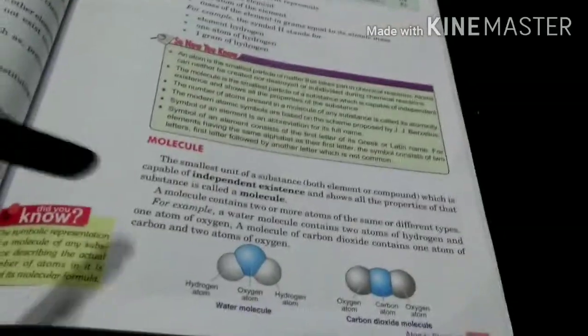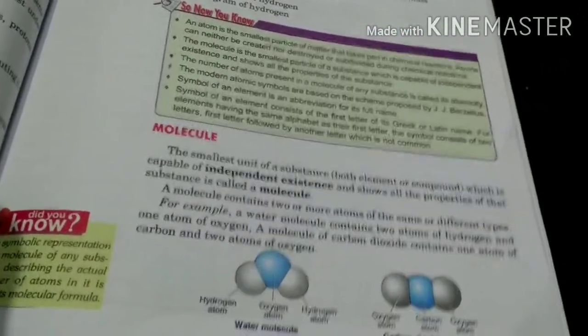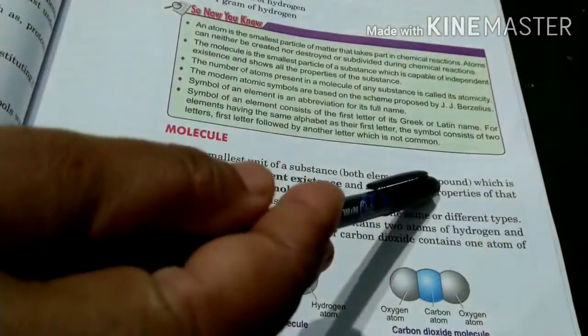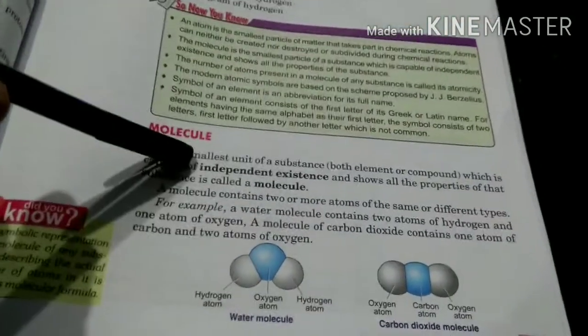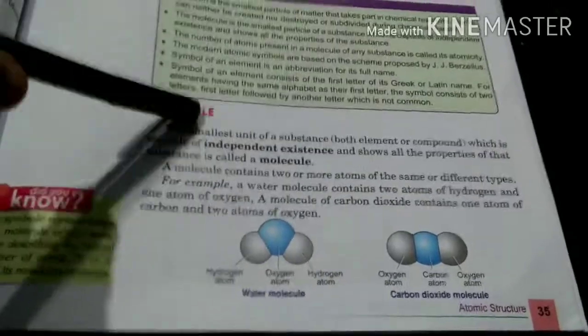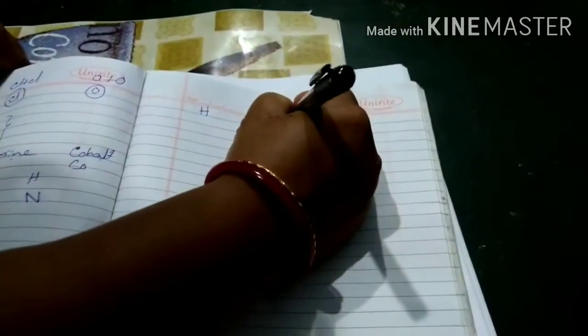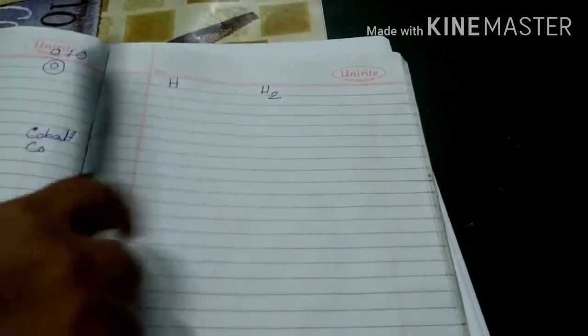Next, come to molecule. What is molecule? What is the difference between atom and molecule? Atom is the smallest particle. Molecule is also the smallest particle, but it is the smallest particle of an element or it can be a compound also. Atoms do not exist independently, but molecules exist independently. When I write hydrogen, the atom is H, but the molecule of hydrogen is H₂.